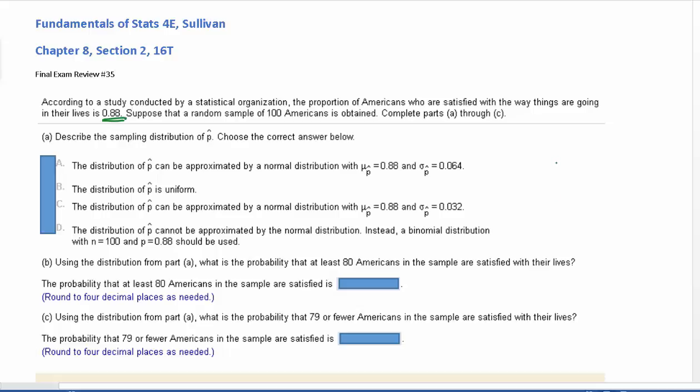0.88 is our p and our sample size is 100, so n is 100. We need to figure out if we can approximate this with a normal distribution. We're going to be doing n times p times 1 minus p, and we need that to be greater than or equal to 10.